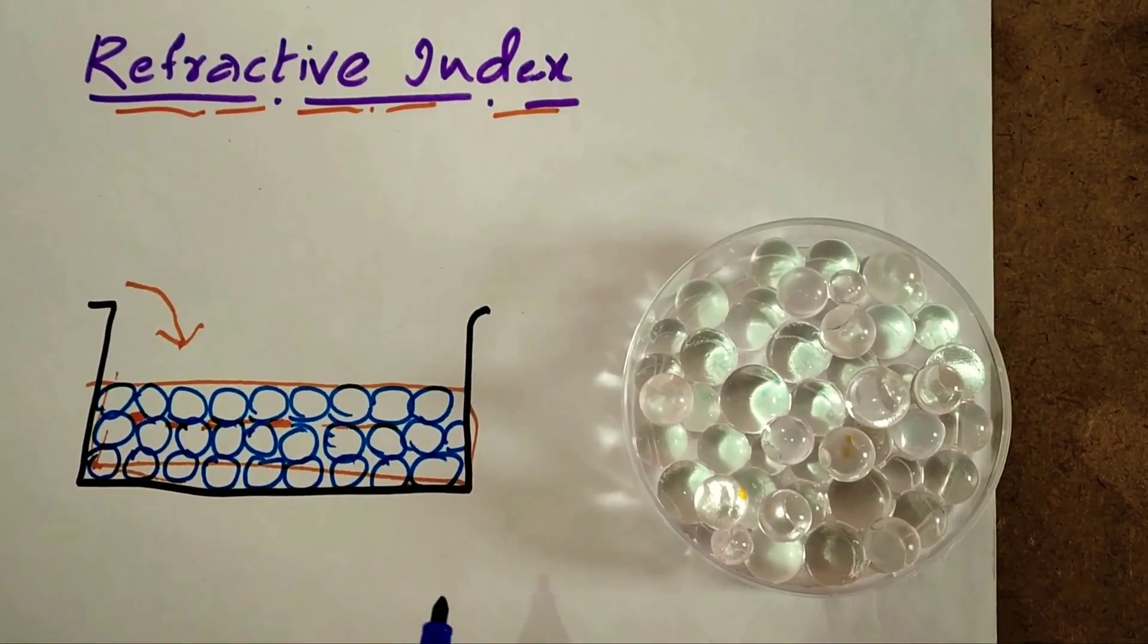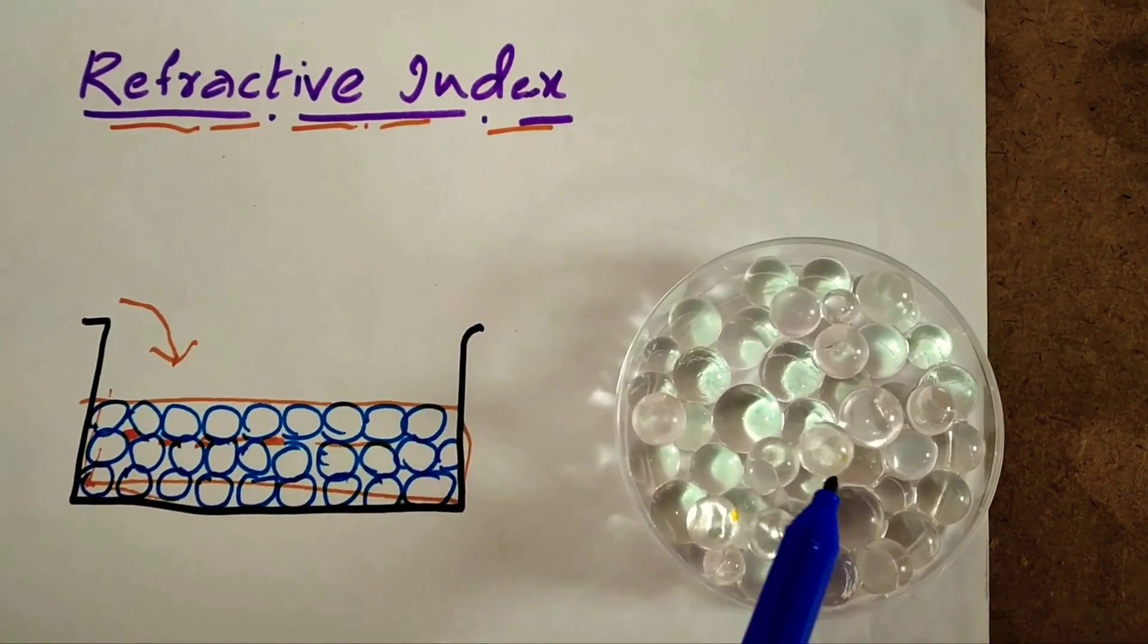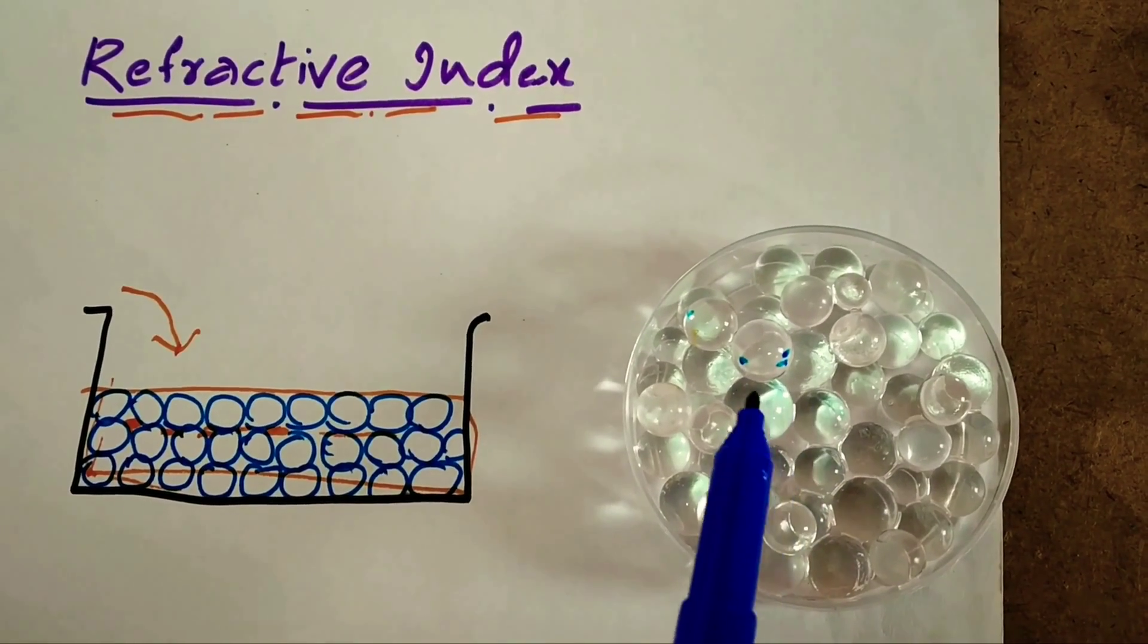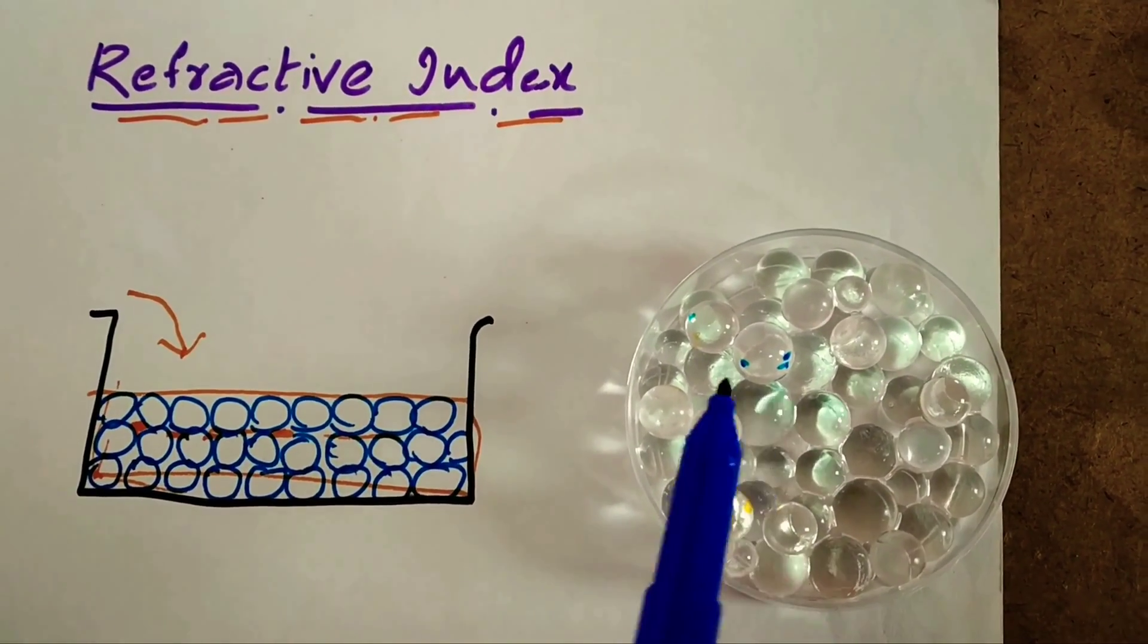Let us see what actually happens. When water balls are poured into the tumbler, every water ball acts like a convex lens in which water is present in it.